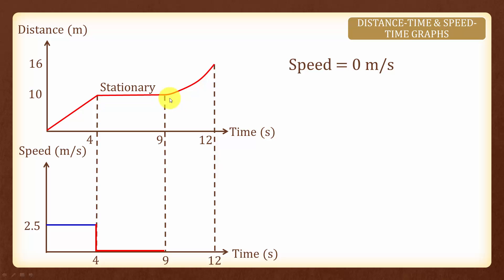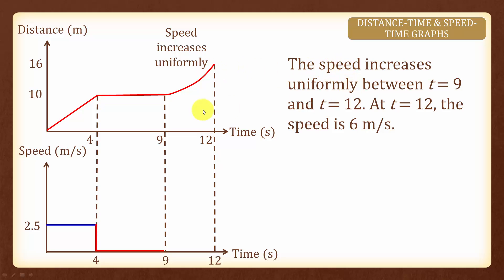Finally, let us look at the last 3 seconds. We were told that the speed increases uniformly and that the speed is 6 meters per second at t equals to 12. Therefore, at t equals to 12 we will have 6 meters per second. Since the speed is increasing uniformly, we have an upward sloping straight line, reaching 6 meters per second as given.